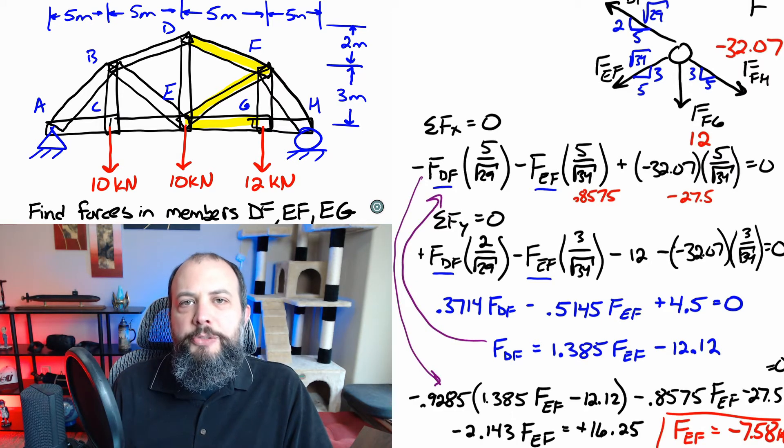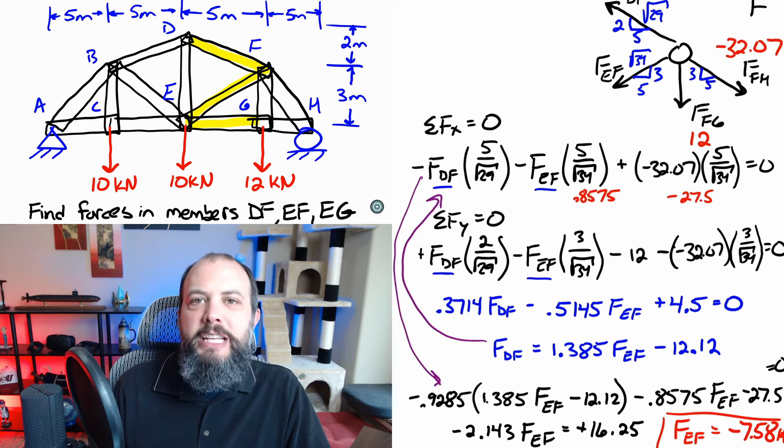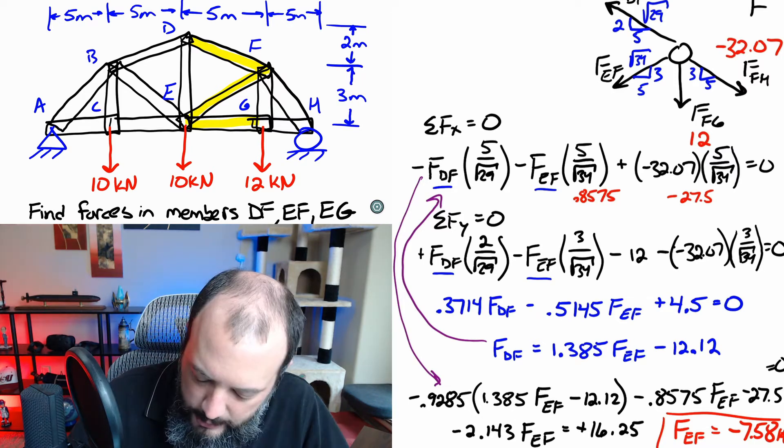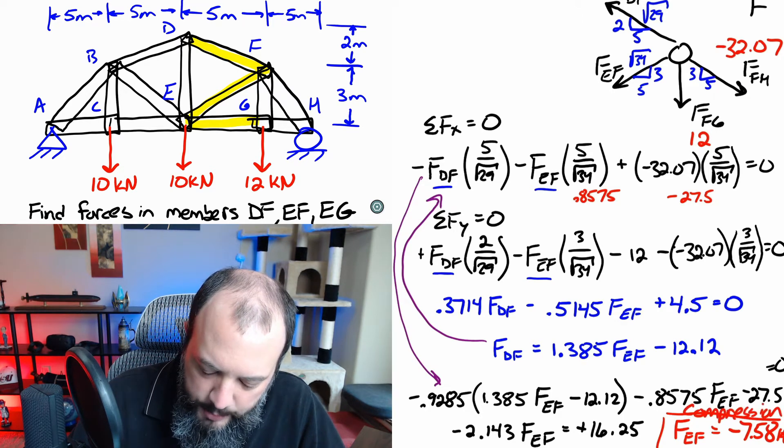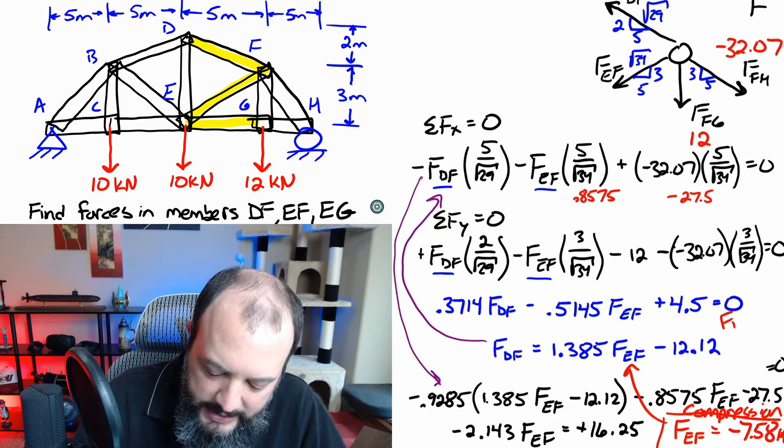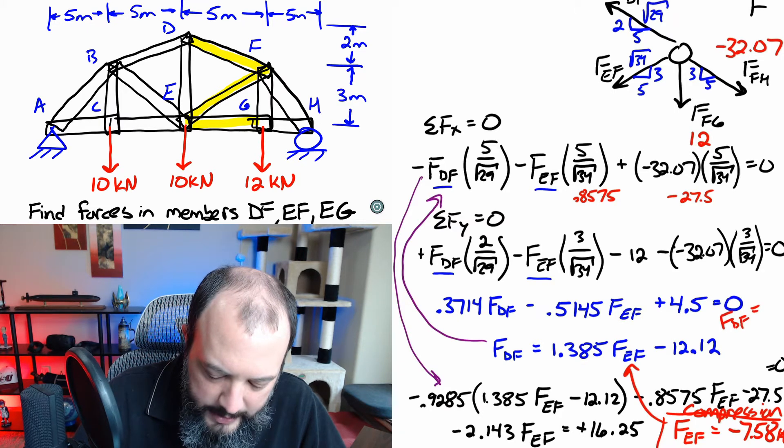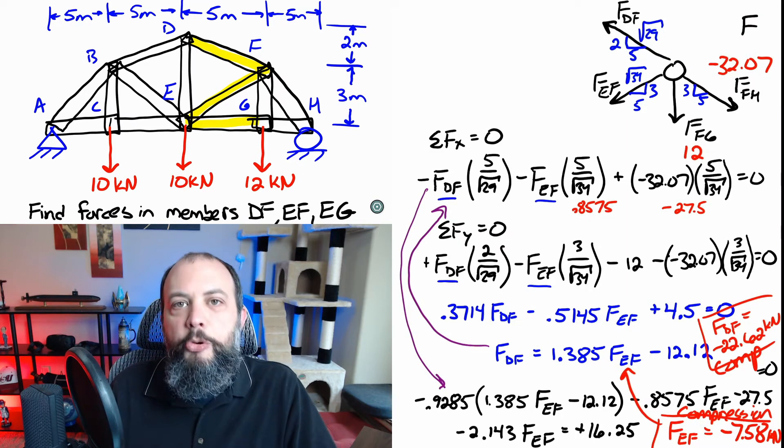So when I plug back into the x direction equation I can solve for FEF as approximately negative 7.58 kilonewtons and I'll add here that that negative sign means that this is in compression and we can plug that number back into this blue equation here to find that FDF is going to equal negative 22.62 kilonewtons and again the negative sign is going to mean that it is also in compression.